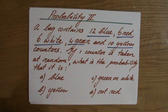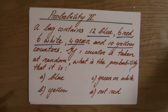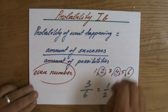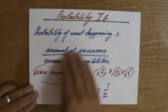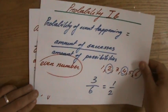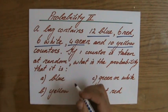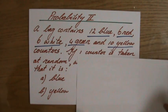So we are calculating the blue counter. I have said in my previous video that to calculate the probability of an event happening, the amount of successes is over the amount of possibilities.